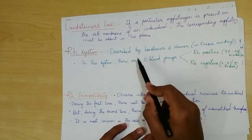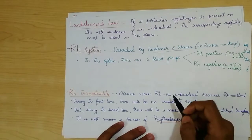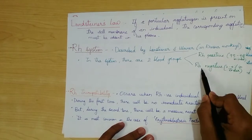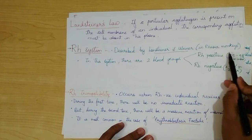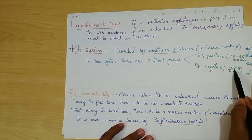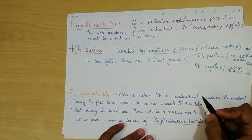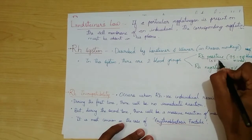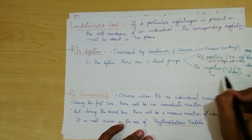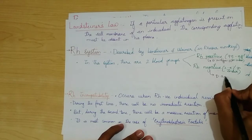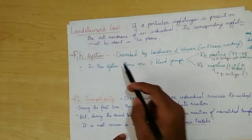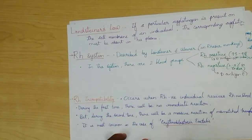The RH system was first described by Landsteinner and Wiener in Rhesus monkeys. In this system there are two blood groups: RH positive and RH negative. In India, 95 to 98 percent of people have RH positive blood group, and 2 to 5 percent have RH negative. RH positive means the D antigen is present on the red blood cells, and in RH negative the D antigen is absent.